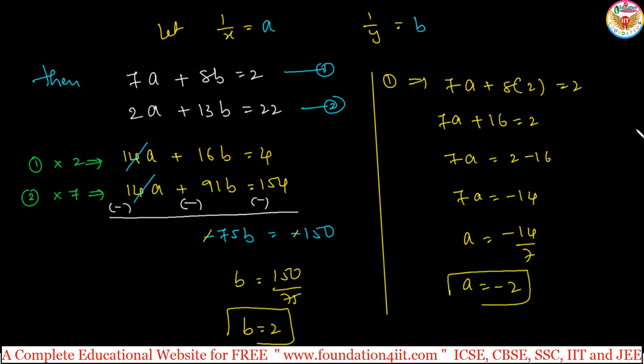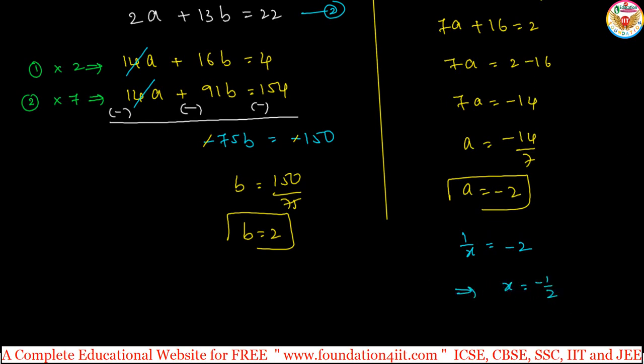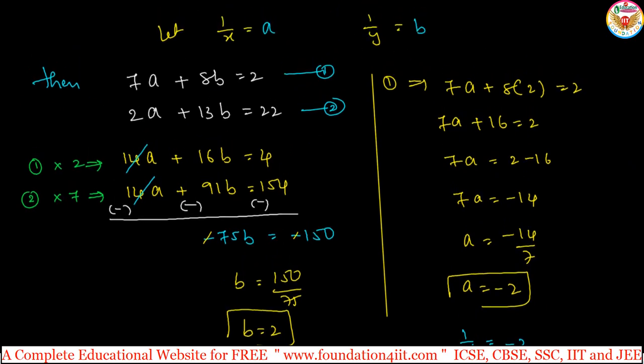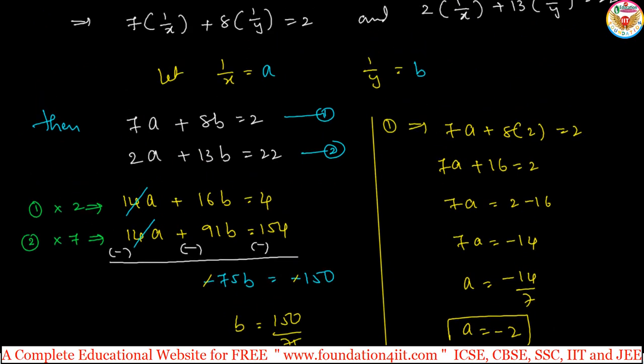Finally, we got a and b values, but our required solution is in terms of x and y. 1 by x equals a, but a is minus 2. If 1 by x is minus 2 then x equals minus 1 by 2. Same way b is 1 by y, so in the place of b take 1 by y equals 2. If 1 by y is 2 then y equals 1 by 2. y value is 1 by 2 and x value is minus 1 by 2. This is the equation.